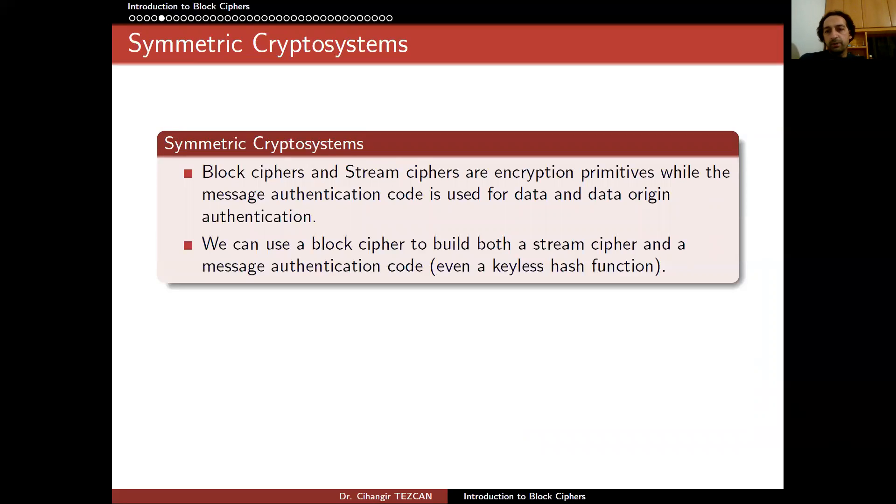So block ciphers and stream ciphers are encryption primitives, while the message authentication code is used for data and data origin authentication. So there is no encryption involved in message authentication codes. But these three topics are not independent. We can use a block cipher to build both a stream cipher and the message authentication code, or we can even create a keyless hash function. So we will be mentioning all of these topics independently. But in order to understand actually all of them, when the course is over, I suggest you to go back and listen to all of these lectures again. And this way, I believe you will have a better understanding of the topics of cryptography.